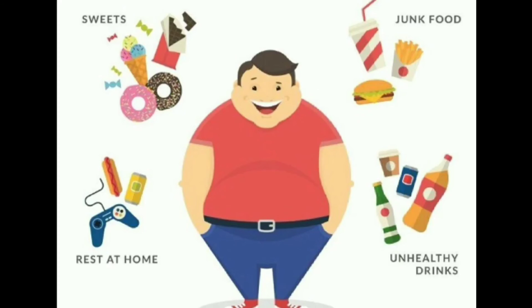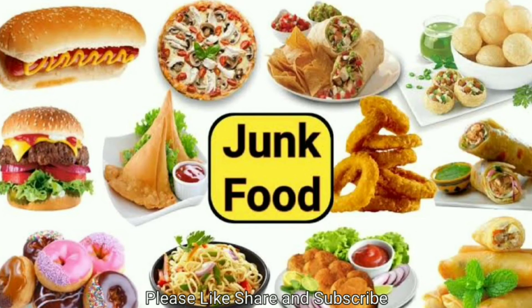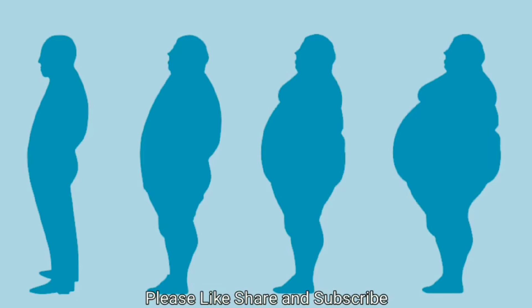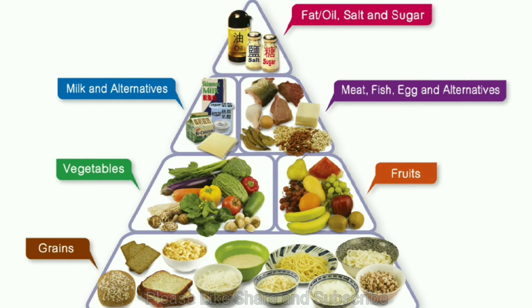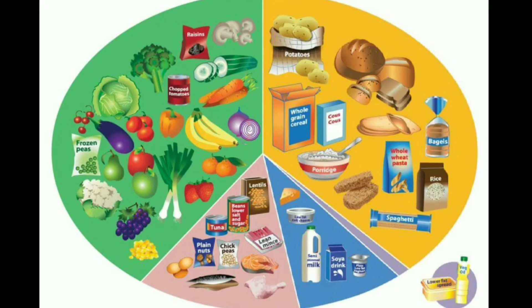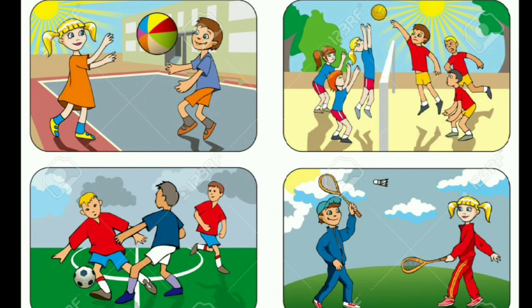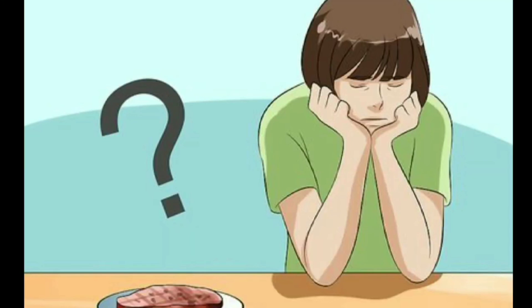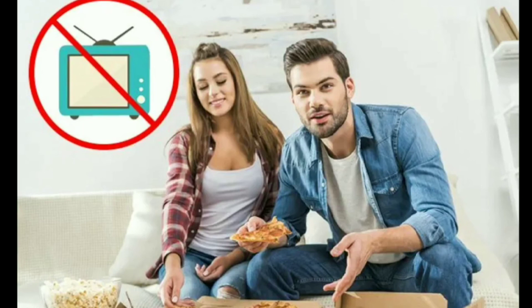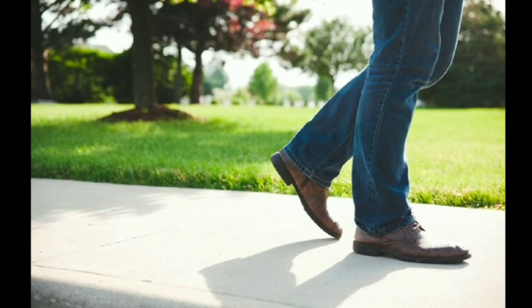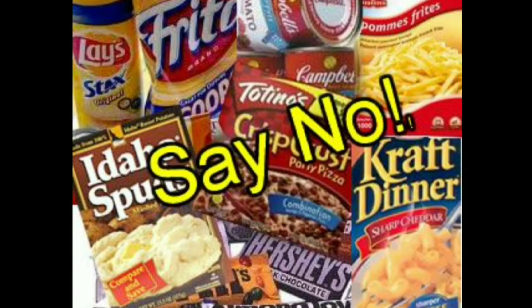How to Avoid Obesity. Have a balanced diet. Eat whole grains. Eat fruits and vegetables with their skins. Increase use of bicycles. Play more outdoor games. Do not eat if you are not hungry. Do not watch TV while eating. Do not use motor vehicles for travelling a short distance. Avoid pre-cooked packaged foods.